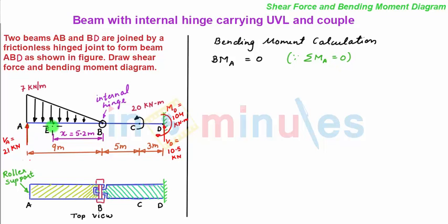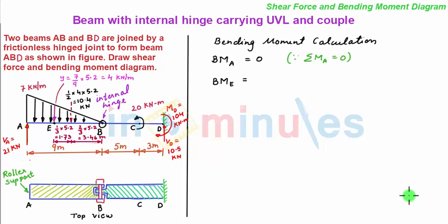Next we move towards point E. For the bending moment at point E, we have the option to consider either the left-hand side or the right-hand side of the section. For simplicity we'll consider the right-hand side of the section. We see that at point E the intensity of the uniformly varying load is 7/9 of X, which is 5.2, equal to 4 kN per meter.